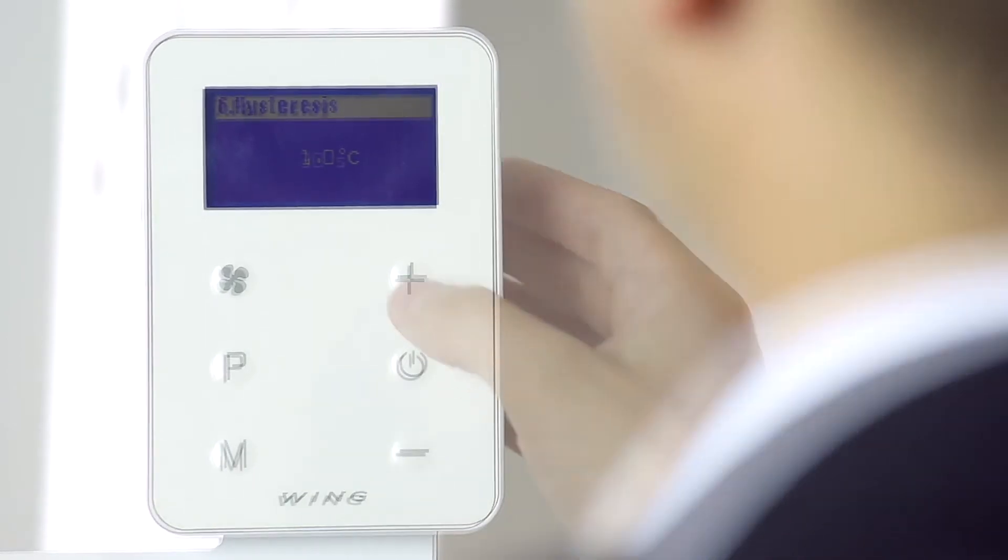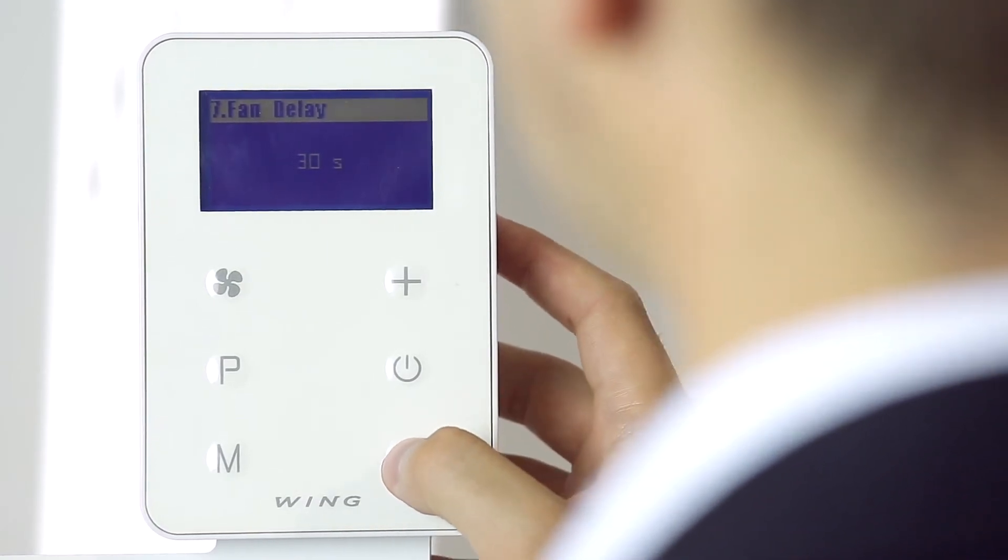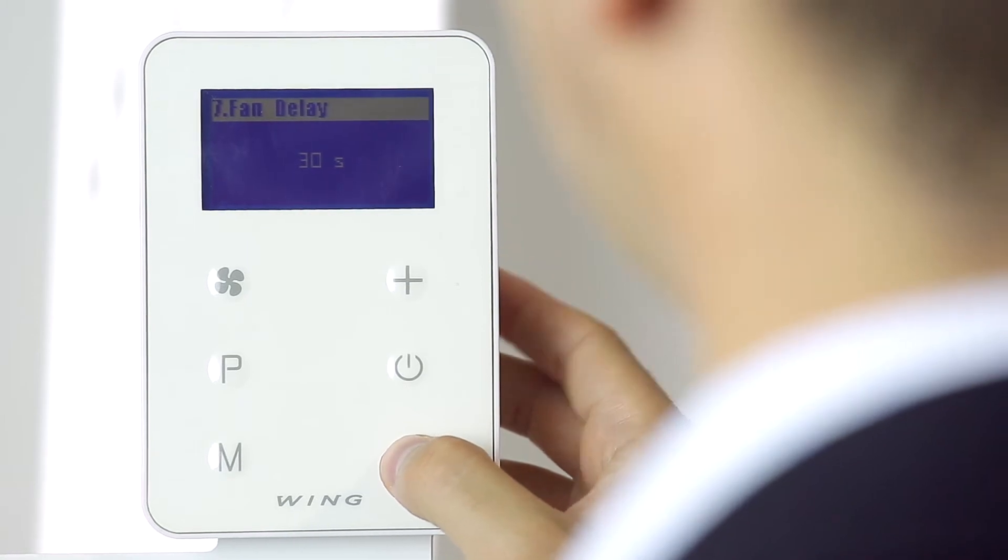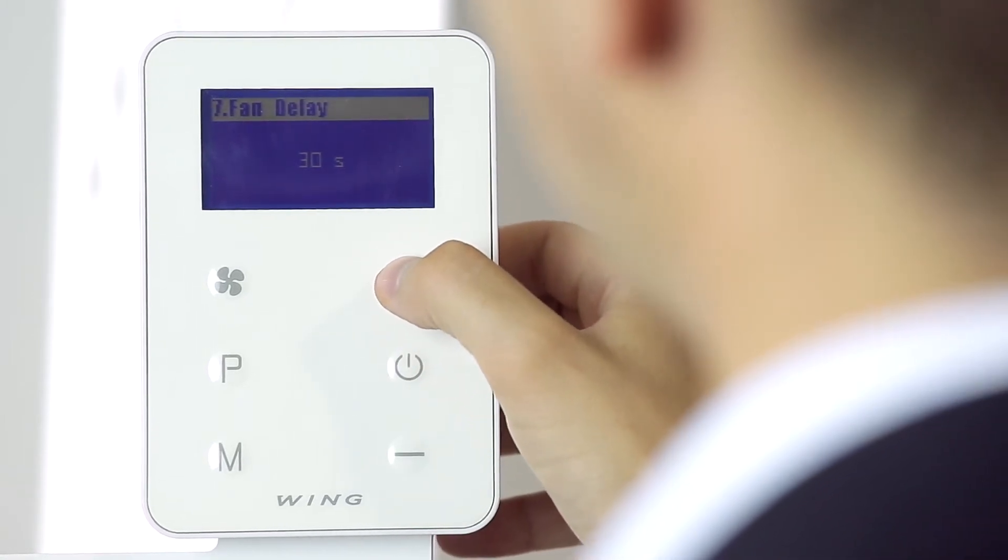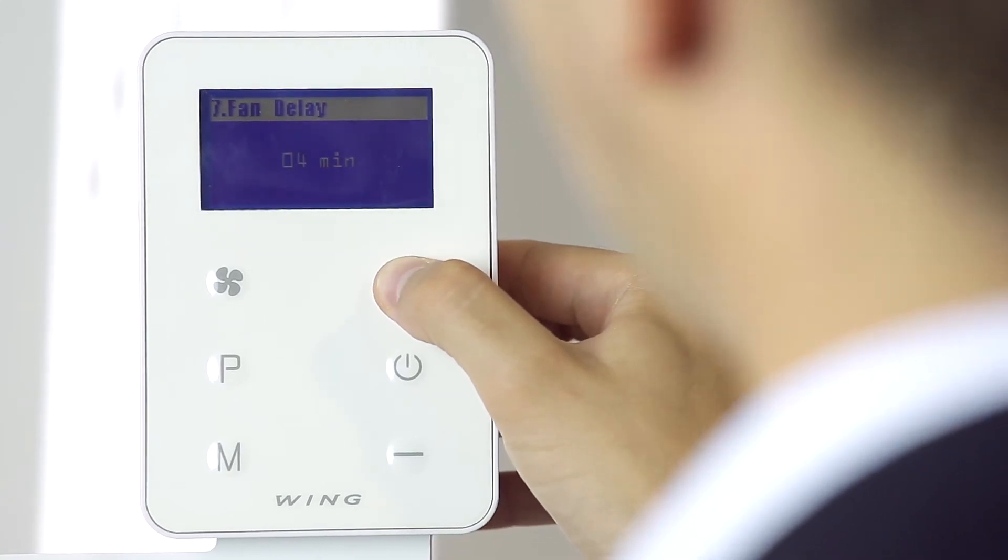Setting number seven of the advanced settings of the Wing EC controller provides the ability to change and set the delay time for the fan of the Wing EC air curtain to turn off. The minimum working time after switching off the heating elements is 30 seconds and the maximum time is 60 minutes. Using the M button, I go to the next setting.